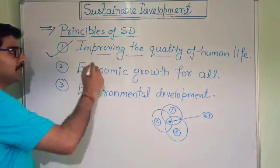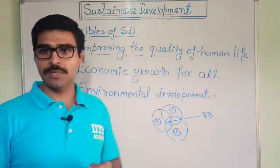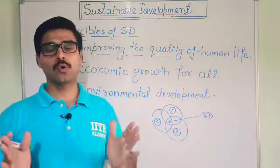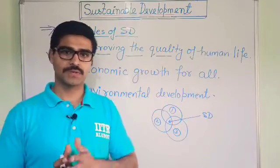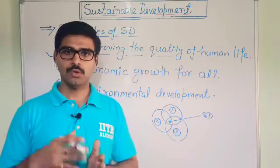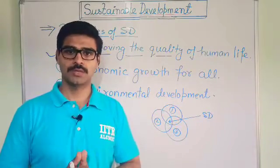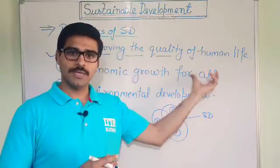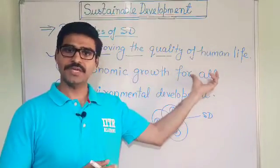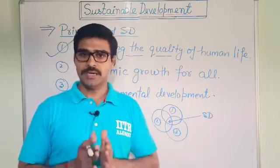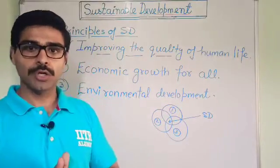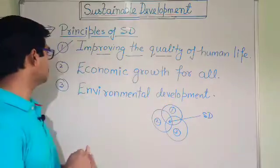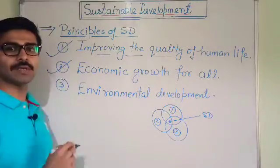The second principle is economic growth for all, whether rich or poor. Economic growth should be for all. How can it be done? It can be done by designing policies accordingly. This is the second principle of sustainable development.